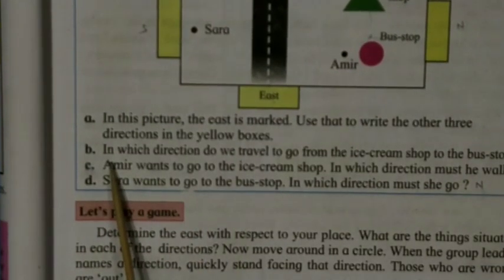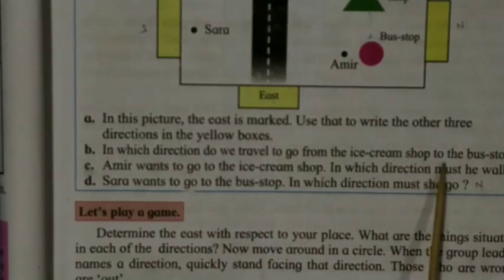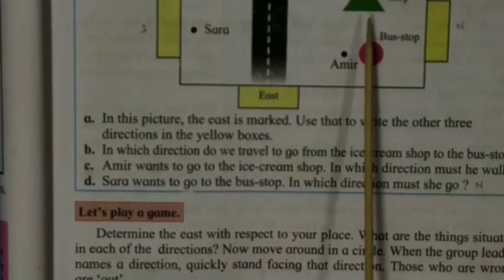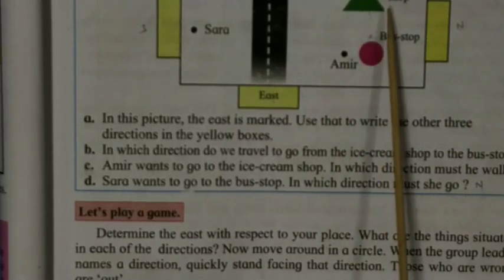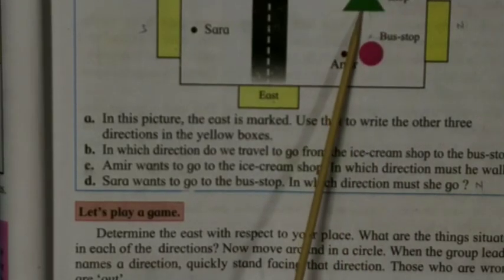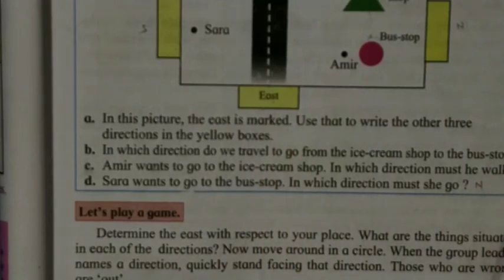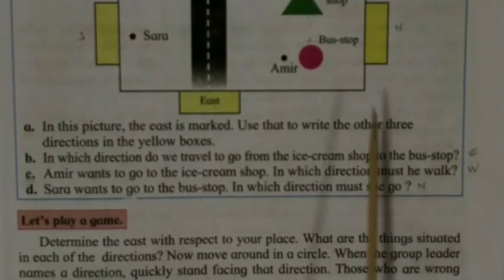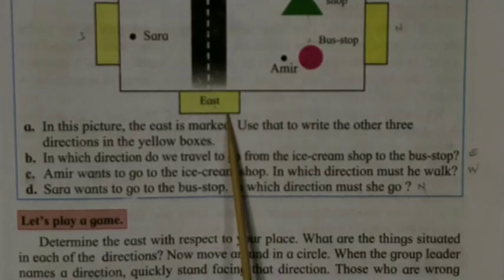Second activity question: in which direction do we travel to go from the ice cream shop to the bus stop? We are standing here and moving to the bus stop — that means we are moving in the east direction. The answer is east.